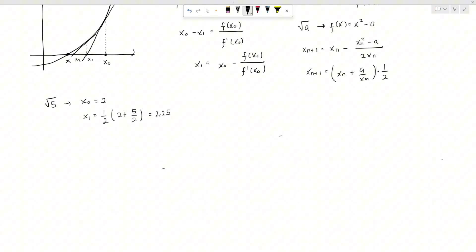We then do this exact same thing again except we plug in 2.25 for xn instead of 2 like we did for the first time. And we get that x2 is equal to 1 half times 2.25 plus 5 over 2.25. And we get that x2 is approximately 2.236.